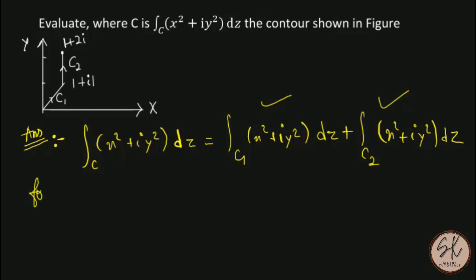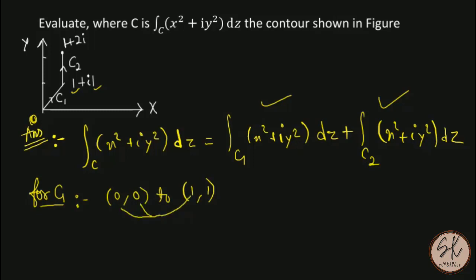Now let us find the integral along C1. C1 is going from (0,0) to (1,1). Since the real part and imaginary part both go from 0 to 1, x and y are both equal, so we take x going from 0 to 1. The equation of the line C1 is y = x.